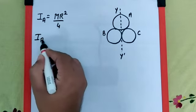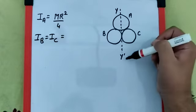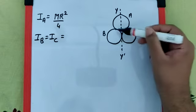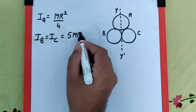For B and C, the axis is in the plane and tangential to the disk, which we know is 5 MR square by 4.